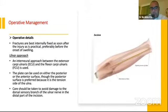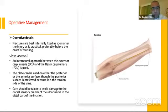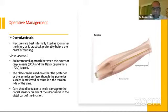From an operative standpoint, the fracture is best fixed as soon after injury as possible to avoid swelling, which changes the anatomy and makes dissection difficult. For the ulnar fracture, we use the ulnar approach — an internervous approach between the extensor carpi ulnaris and flexor carpi ulnaris, between the ulnar nerve and the posterior interosseous nerve. The plate can be placed on either the posterior or anterior aspect of the ulna. The posterior surface is preferred because it is the tension side, providing a biomechanical advantage.